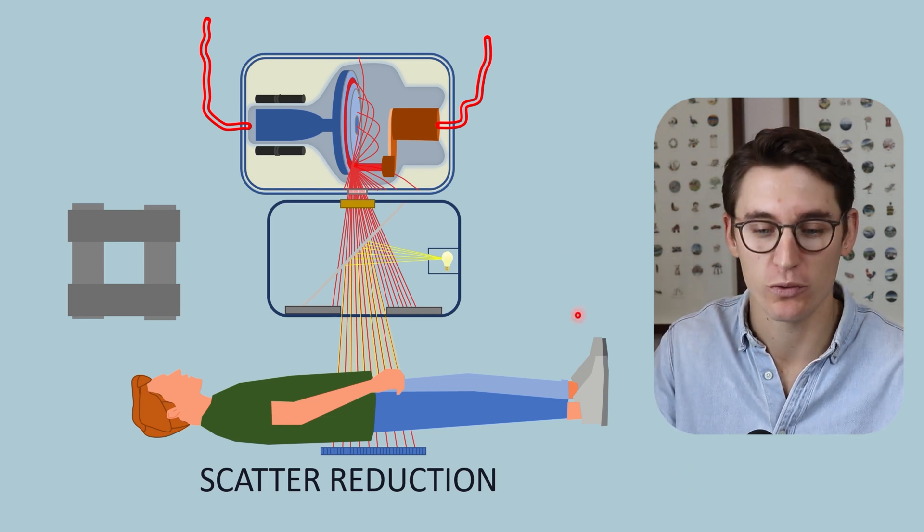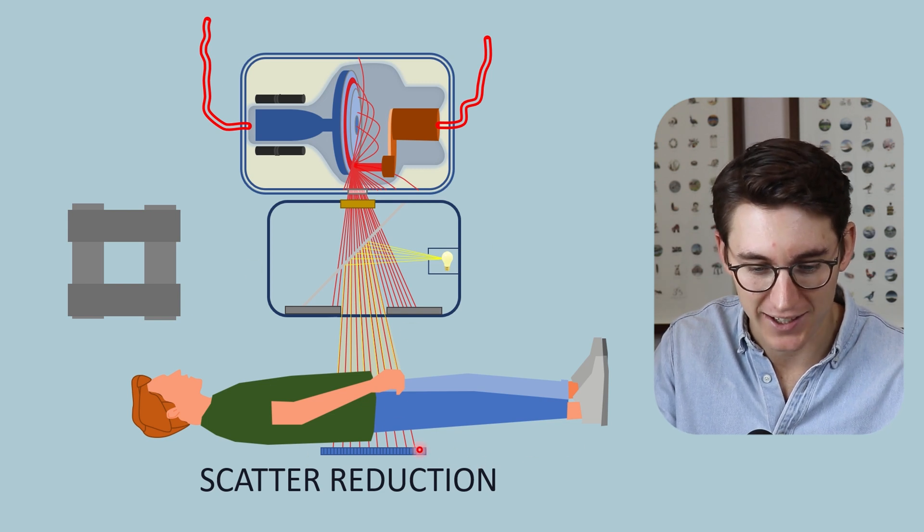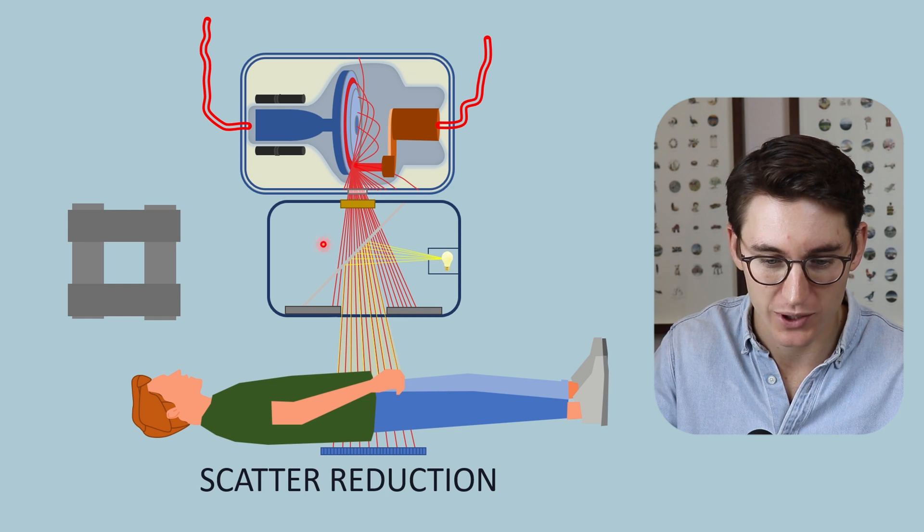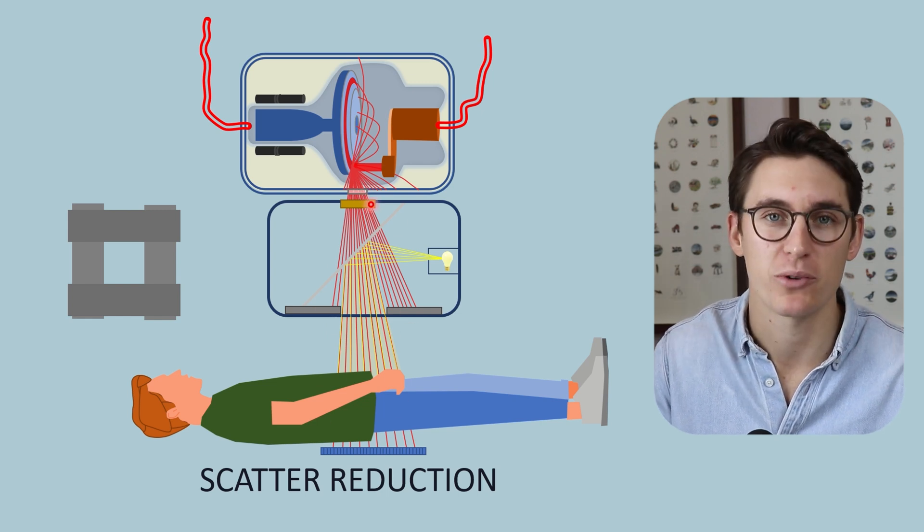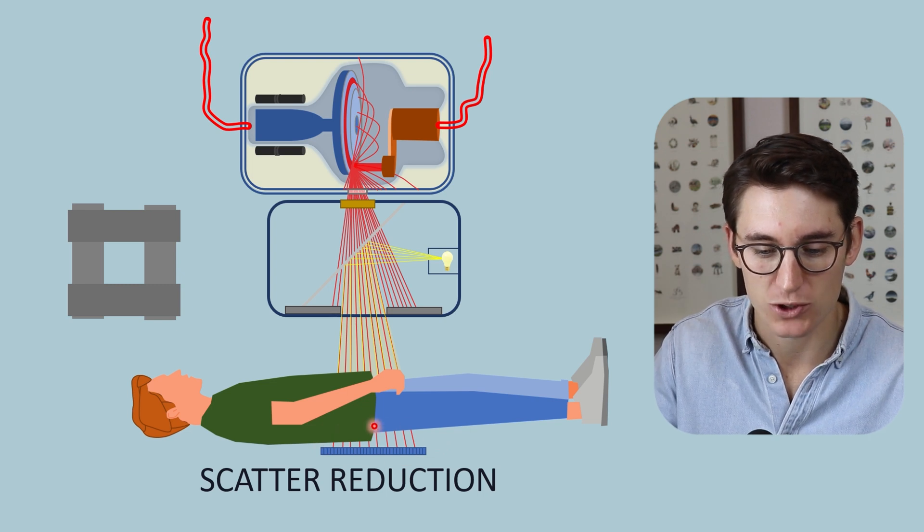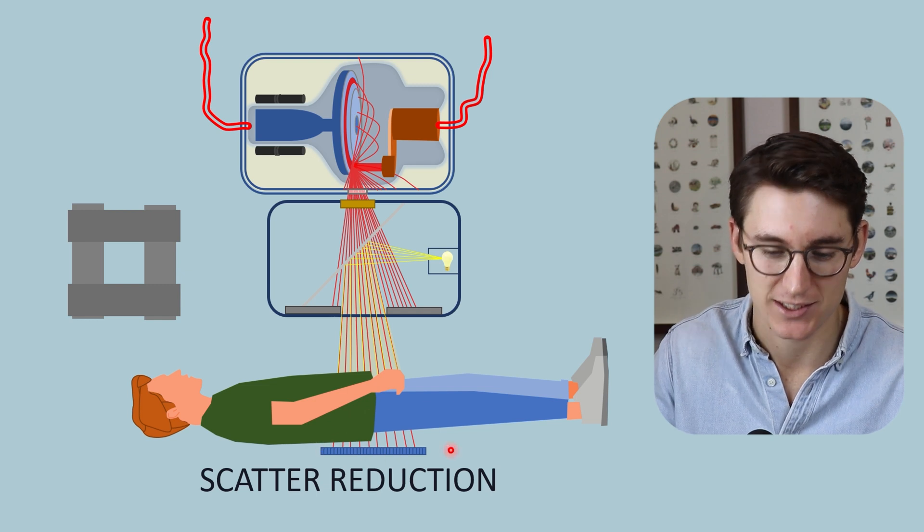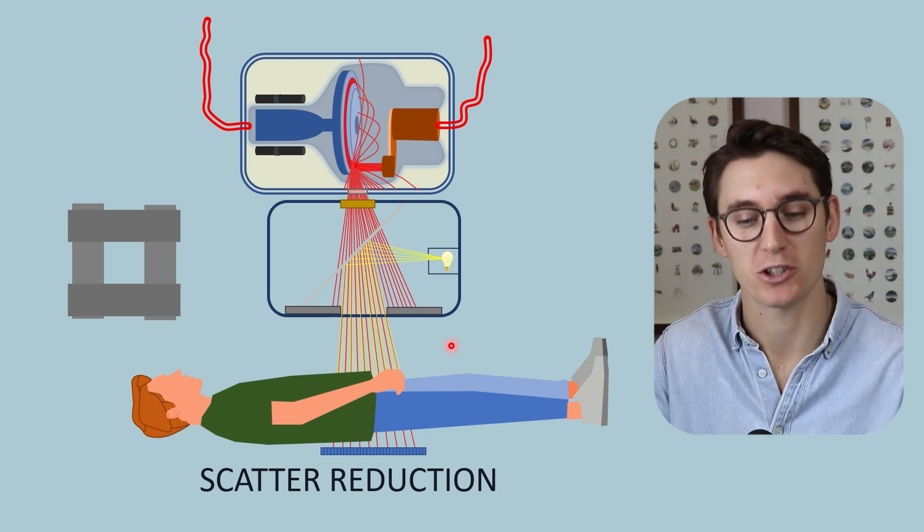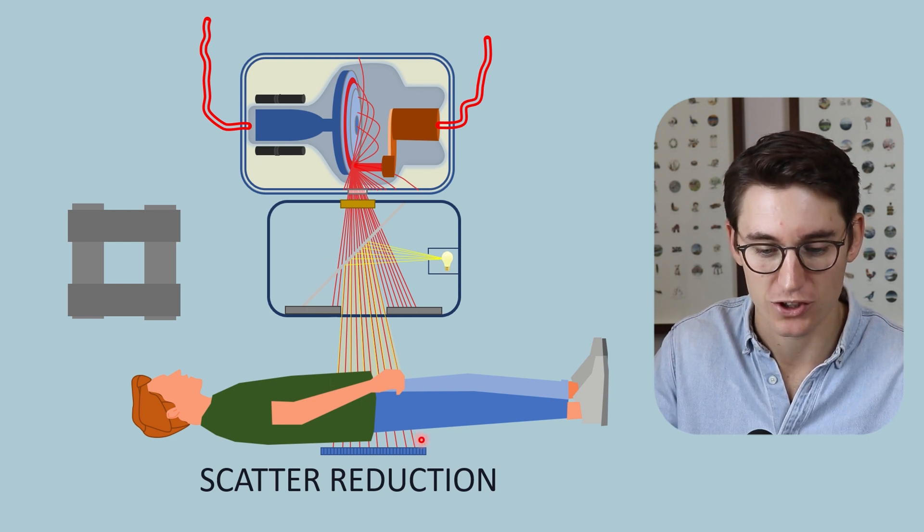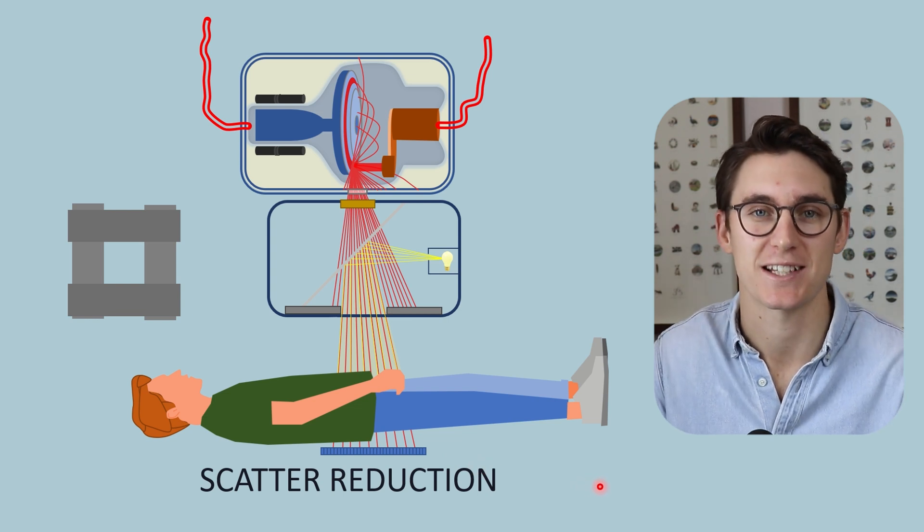Now if we look at our x-ray overview here we have our x-ray tube, our collimator, our patient, and our detector. We call this x-ray beam prior to hitting the patient our primary x-ray beam and the beam leaving the patient the remnant or exit x-ray beam, and it's the exit x-ray beam that hits our detector here. Now we can change multiple factors either in the primary x-ray beam or within our patient or within this exit x-ray beam in order to reduce scatter in the image.